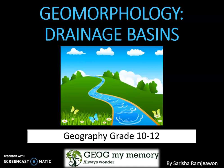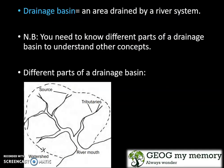Welcome back to Jog My Memory. This video is looking at drainage basins for grade 10 to 12 geography. A drainage basin is basically an area that is drained by a river system. You need to know the different parts of a drainage basin in order to understand other concepts. This image shows the different parts: here you have the watershed, which encompasses the water source and tributaries, which leads to the river mouth.